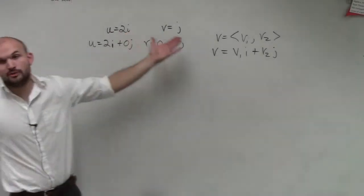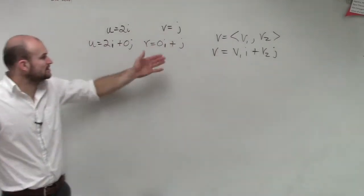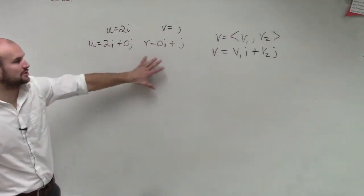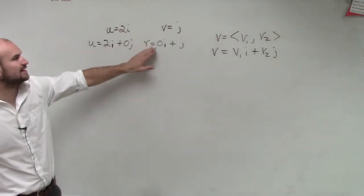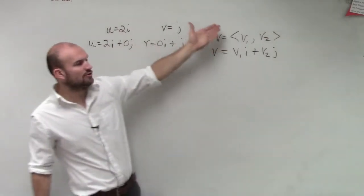So I provided you guys with u and v. And then what we looked at is, remember, we can write those as a linear combination of 2i plus 0j equals u and 0i plus j equals v. And remember,